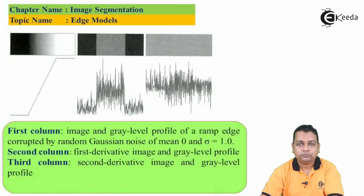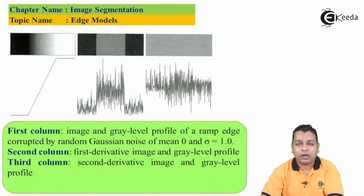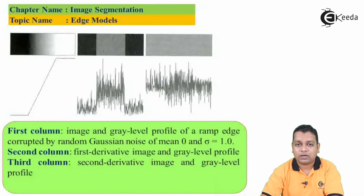The third figure again has three columns. The first column shows the image and gray level profile of the ramp edge corrupted by Gaussian noise with mean μ=0 and σ=1.0, which is increased compared to earlier cases. In the second column, if you notice the first derivative image and gray level profile compared to the earlier slide, the noise intrudes significantly. Graphically as well as in the image form, you can notice the changes. The same applies to the second derivative image and gray level profile in the third column.